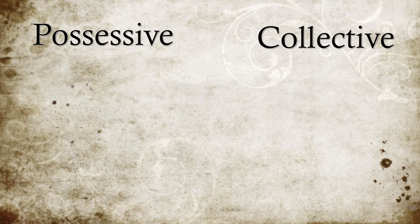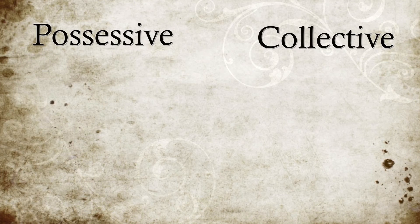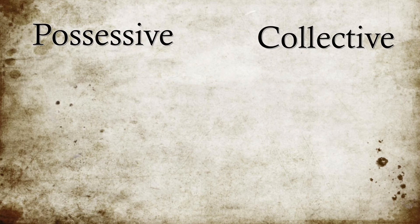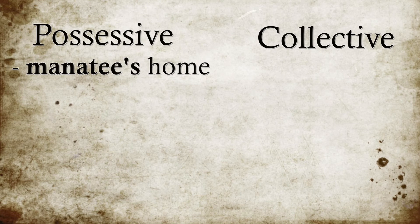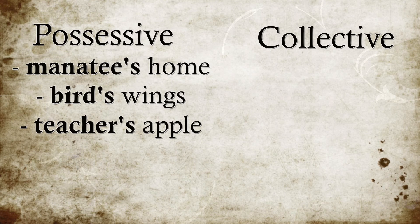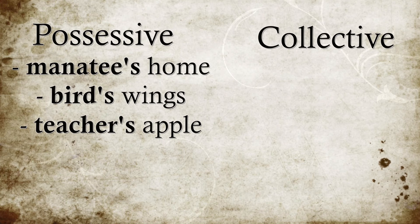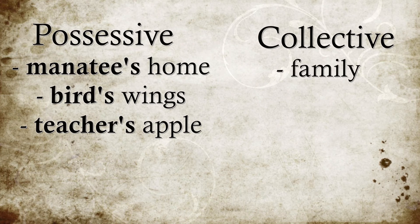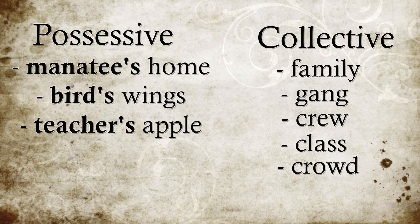These last two are the most complicated, but if you break them down the right way, they're easier to understand. Possessive nouns show possession — as in ownership of something. The biggest hint that it's a possessive noun is that you're going to see that apostrophe S at the end of a word showing specific ownership. Examples are: manatee's home, bird's wings, or the teacher's apple. And then collective nouns indicate a group of individuals — words like family, gang, crew, class, crowd, or committee.